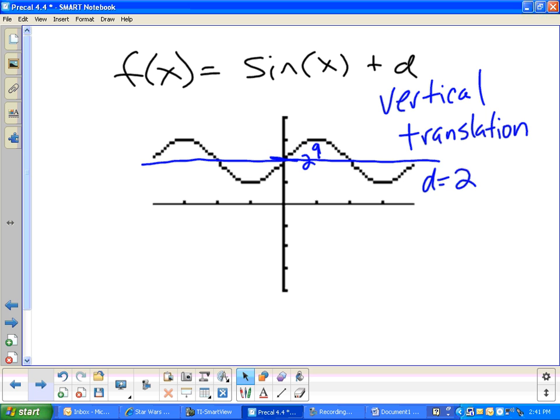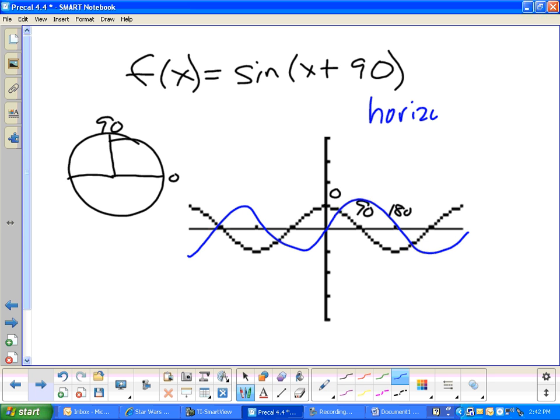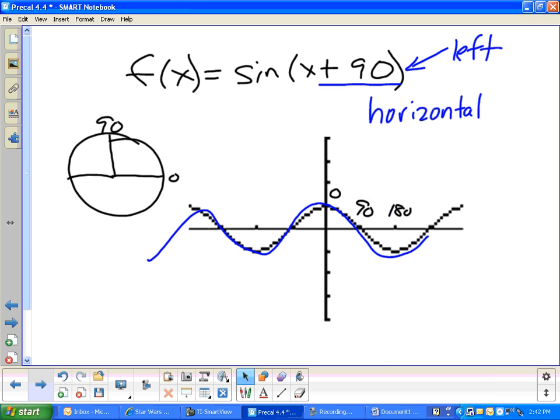Then the next one is, well, the last number is c. What happens when you have x plus some number in here? And here's what the graph looks like when you have x plus 90 degrees. So does it move it over 90 or to the left? It is a horizontal shift. So it's to the left or right. And if you remember when we were studying functions, plus 90 actually means to the left 90 degrees. So this blue line has been shifted over 90 degrees.